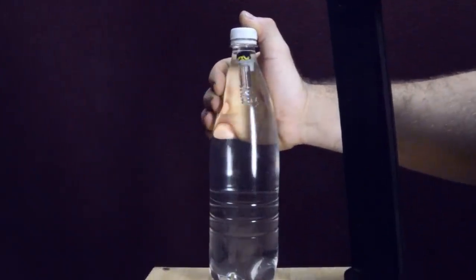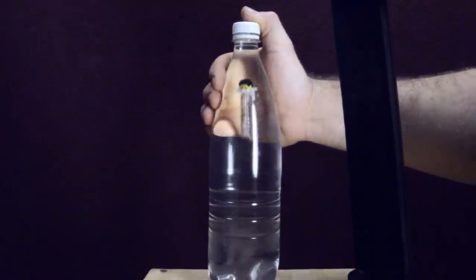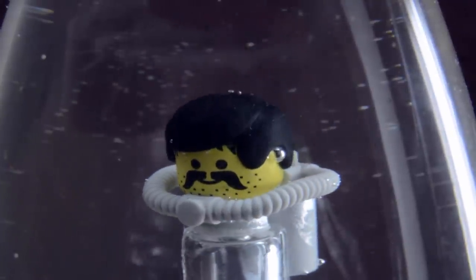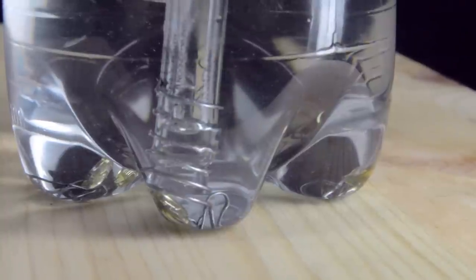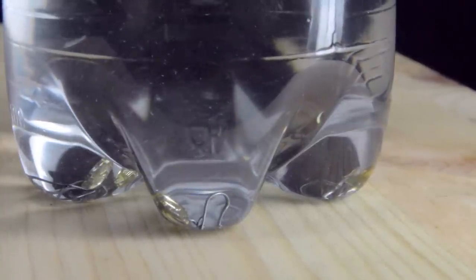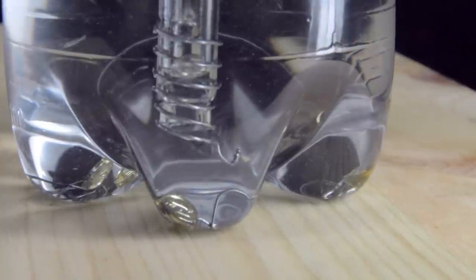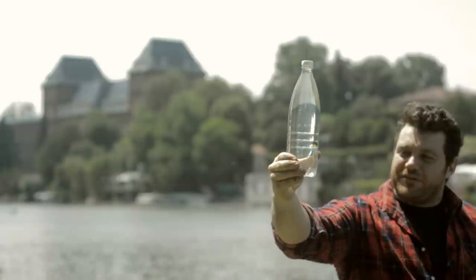I can control very easily the depth of Antonio just controlling the pressure of my hand. As you can see I can keep it at mid air, I can go down or I can go up. So the goal of the game is to catch with the hook all the coins that are on the bottom.